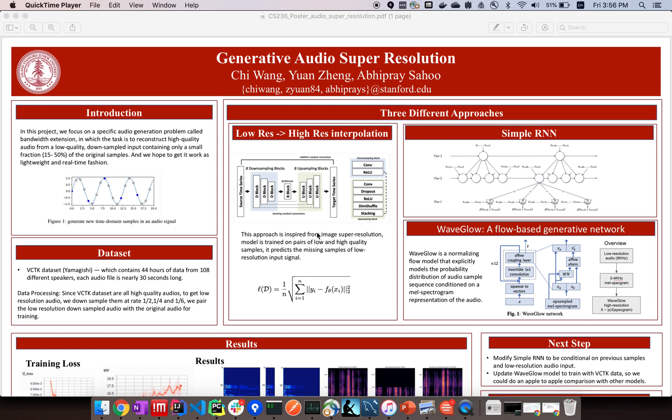The last one we try is this low resolution high resolution interpolation neural network. This is a very simple approach inspired by image super resolution. Basically we build a model which learns how to interpolate low resolution audio files to higher ones. Especially at the downsample steps, we halve the spatial dimension and double the filter sets. During upsampling, this is the reverse.